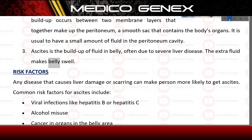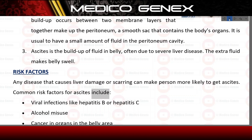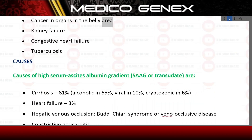The extra fluid makes the belly swell. Risk Factors. Any disease that causes liver damage or scarring can make a person more likely to get ascites. Common risk factors for ascites include viral infections like Hepatitis B or Hepatitis C, alcohol misuse, cancer in organs in the belly area, kidney failure, congestive heart failure, and tuberculosis.